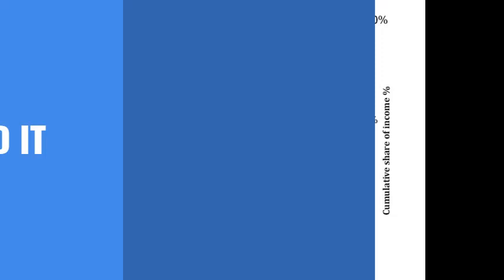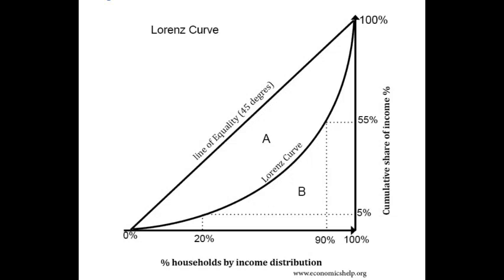The Lorenz curve measures the income percent every section of the population has. On a graph like this, the x-axis shows the percent of population, and the y-axis shows the cumulative share of their income.